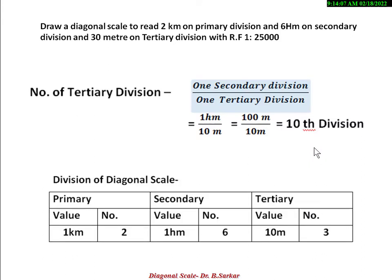Now draw a chart showing divisions of the diagonal scale — primary, secondary, and tertiary division. Primary division value: minimum 1 km, so 1 km into 2 gives 2 km. Secondary division value: 1 hectometer into 6 gives 6 hectometer. Tertiary division: 1 tertiary division is 10 meter into 3 equals 30 meters. In this way you may calculate the diagonal scale.